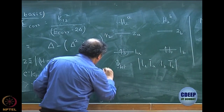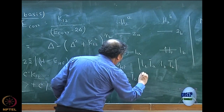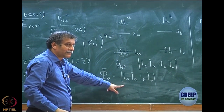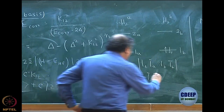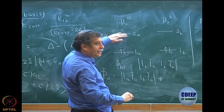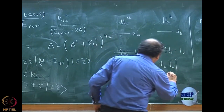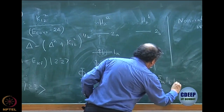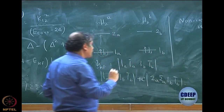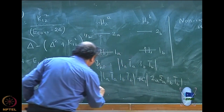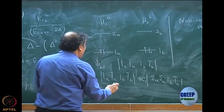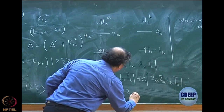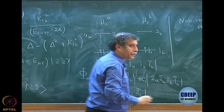What is now my total wave function phi_0? It is |1A, 1A bar, 1B, 1B bar> — that is Hartree-Fock, written in intermediate normalization — plus C1 times |2A, 2A bar, 1B, 1B bar>, where this molecule is excited, plus C2 times |1A, 1A bar, 2B, 2B bar>, where the other molecule is excited.